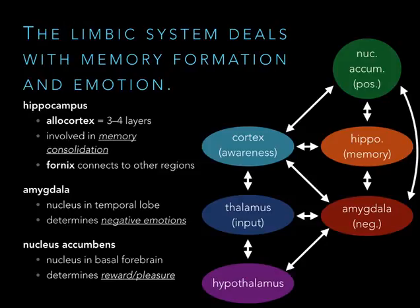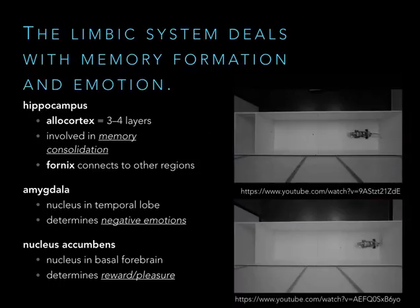The amygdala is actually very useful for survival — it's good to be afraid of dangerous things. In a demonstration, a normal rat with intact amygdalae runs away from a mechanical cat, while a rat with both amygdalae removed shows no fear, calmly grabs food next to the mechanical cat, and returns to its hole. So while the amygdala creates negative emotions, its activation can be life-saving by helping us avoid dangerous situations.